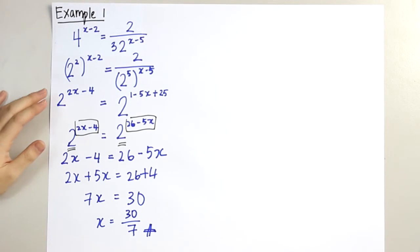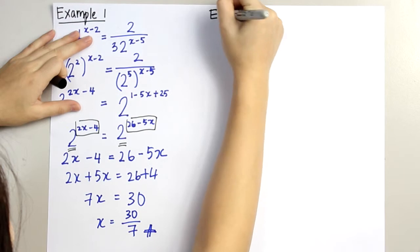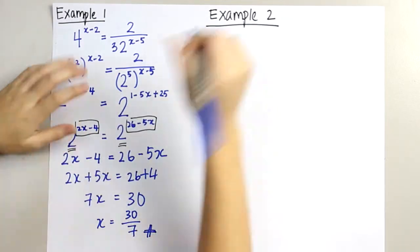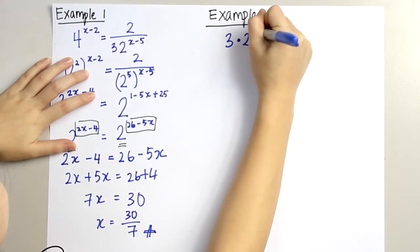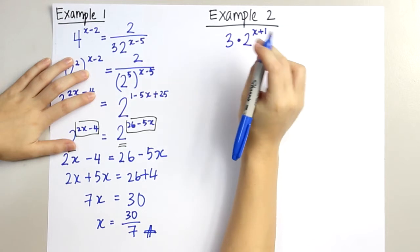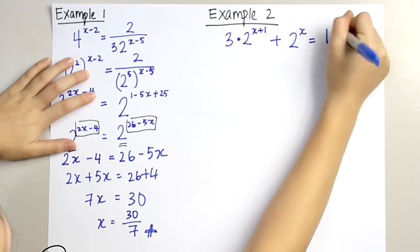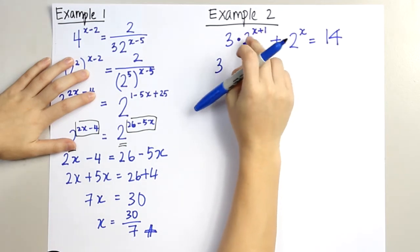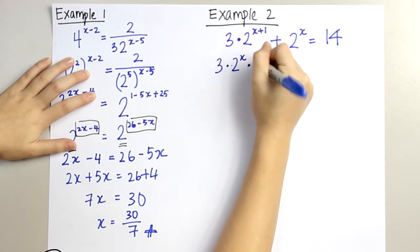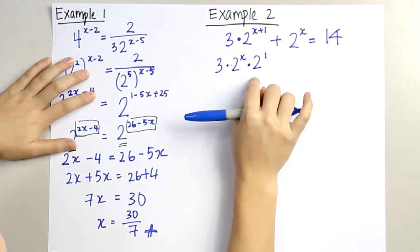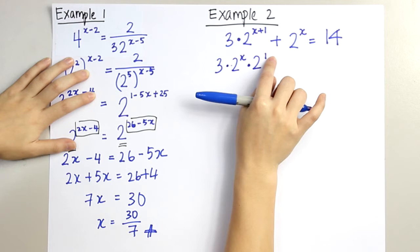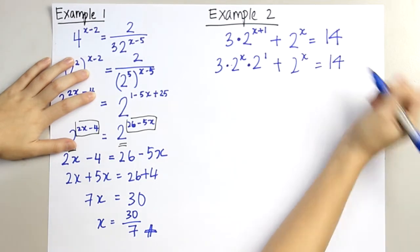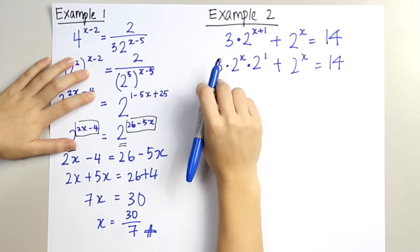Now we go into the second question. For the second question: 3 times 2 to the power of x plus 1 — note that the dot is actually a multiplication — plus 2 to the power of x equals to 14. What we can do is separate this 2 to the power of x and 2 to the power of 1. It will become 2 to the power of x times 2 to the power of 1, because when they both have the same base, we can add the powers together, giving x plus 1.